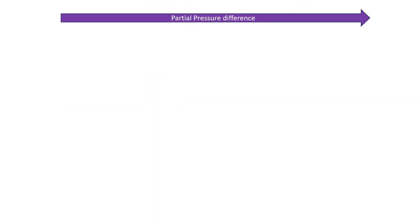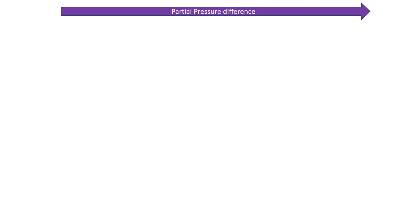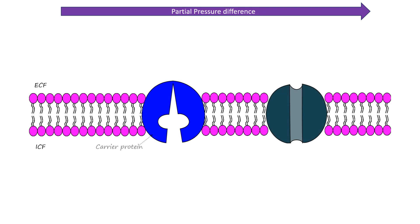The routes of drug absorption we discussed require that the drug crosses biological membranes before it gets into the blood — this is called membrane transfer. Membrane transfer also applies to other pharmacokinetic principles of distribution, metabolism, and elimination, as all these processes rely on the drug being transferred between tissues or cells. There are several ways for a drug to move across biological membranes: passive transport, carrier-mediated transport, and filtration.